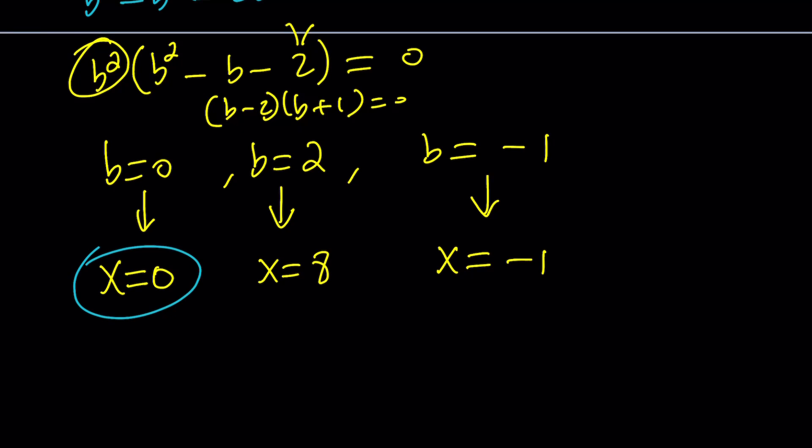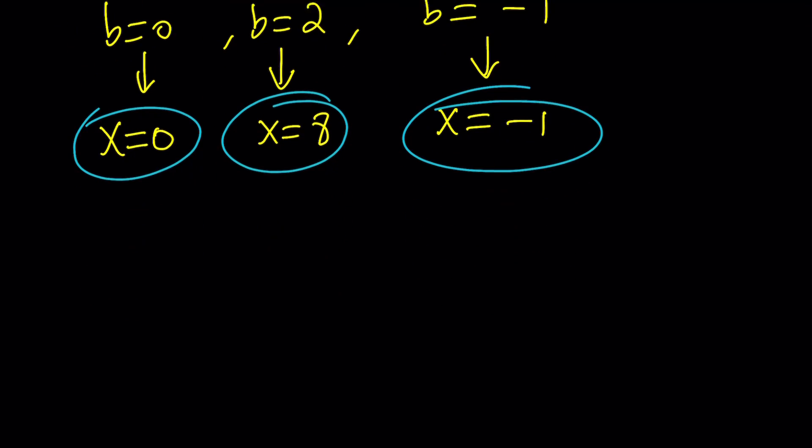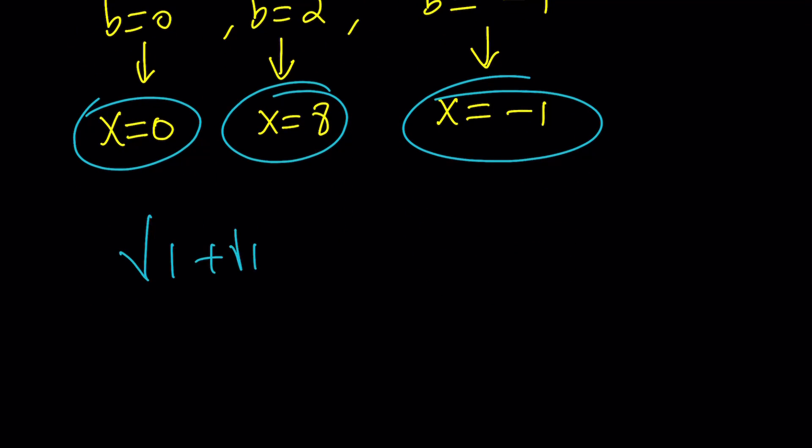Now we've got three values, but are they all valid? We need to check because this is a radical equation. We did some transformations, maybe inadvertently squared both sides, and we need to make sure our solutions actually check. Now if you replace x with 0, let's see what happens.